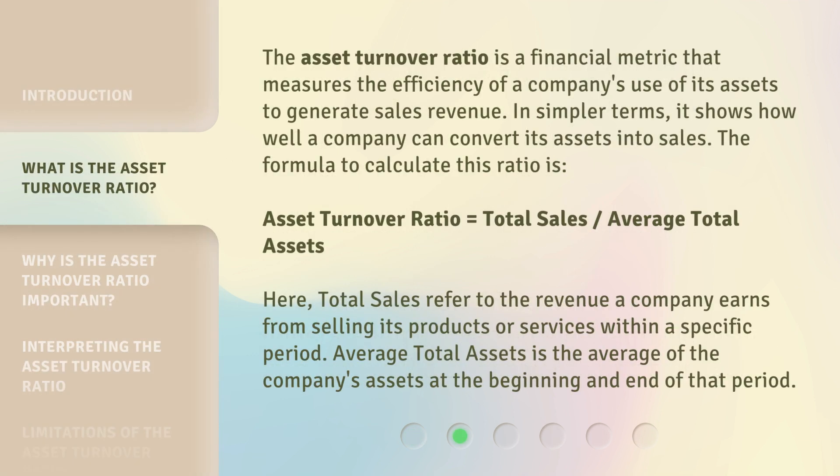The Asset Turnover Ratio is a financial metric that measures the efficiency of a company's use of its assets to generate sales revenue. In simpler terms, it shows how well a company can convert its assets into sales. The formula to calculate this ratio is: Asset Turnover Ratio equals Total Sales divided by Average Total Assets. Here, total sales refer to the revenue a company earns from selling its products or services within a specific period, and Average Total Assets is the average of the company's assets at the beginning and end of that period.